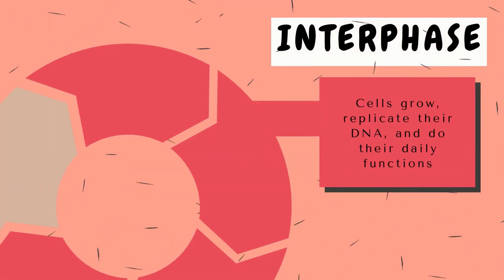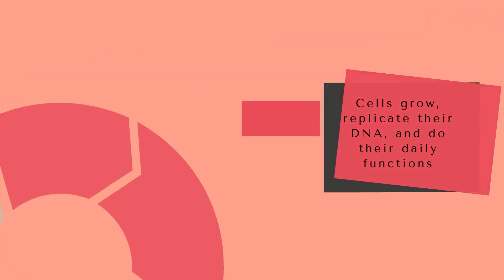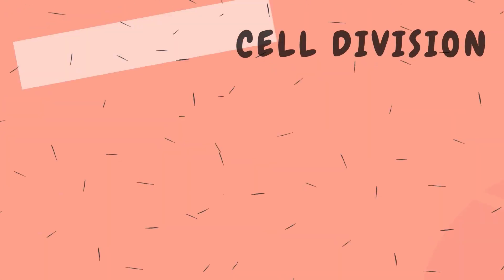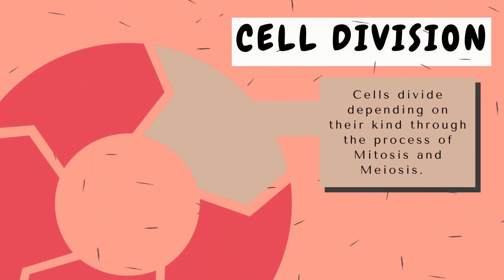The first one, called interphase, is where the cell spends most of its time. Under this phase, the cells themselves are growing, replicating their DNA, and carrying out their daily cell functions. Cell division then initiates after the completion of interphase, and cells can divide and reproduce in two ways.